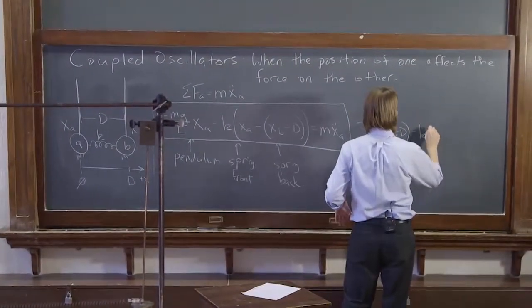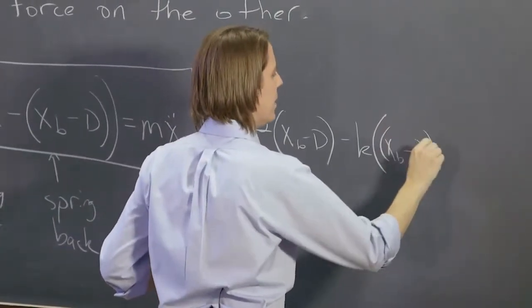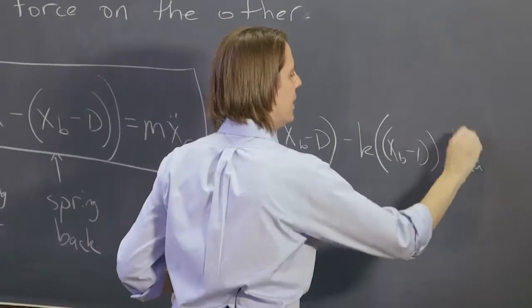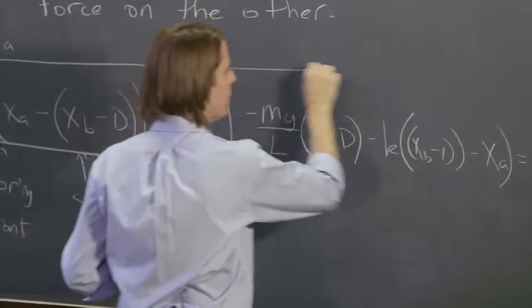Minus k in the front, xB minus D, minus the back, xA, equals m xB double dot. Now, there's the other equation of motion.